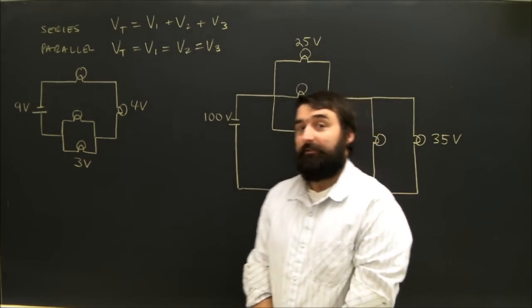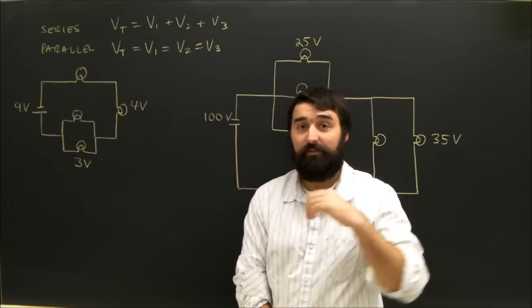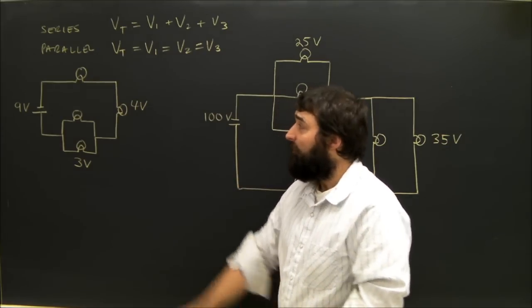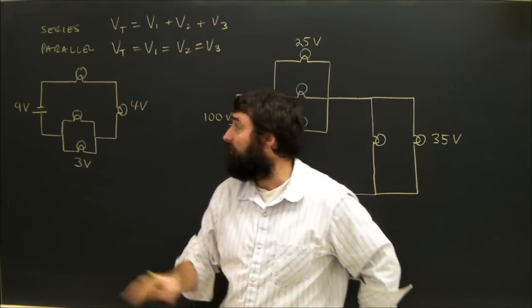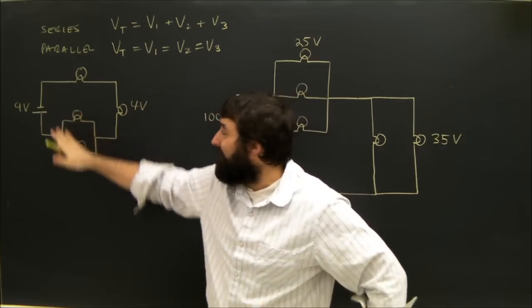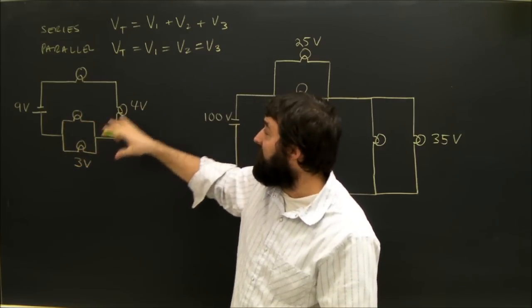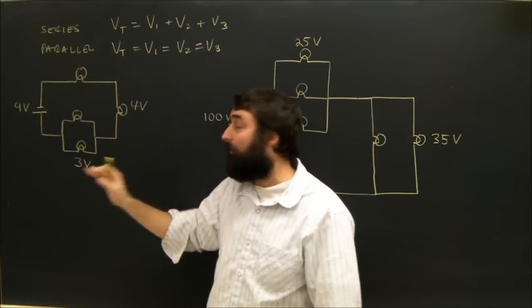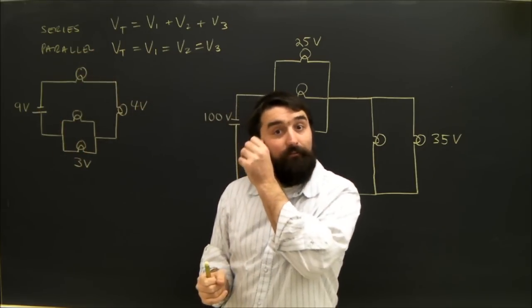Okay, so now we're going to talk about the voltage. There's two rules for voltage, which we'll get into in one second. We have the same circuit we had in the current video a minute ago. Here we have two bulbs that are connected in parallel, and as a group these two bulbs are connected in series with this bulb and this bulb, and they're all connected to a 9 volt power source.